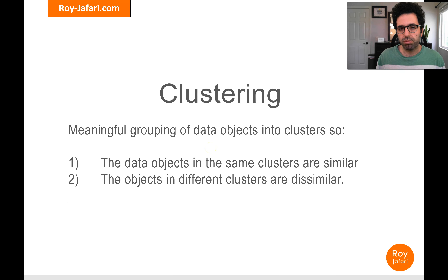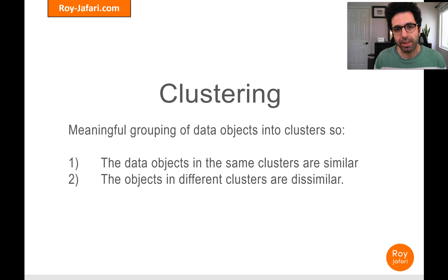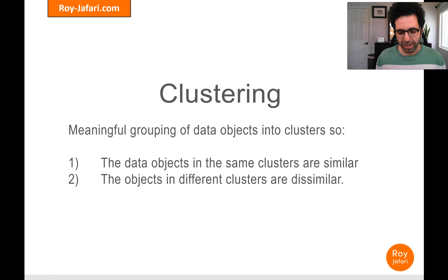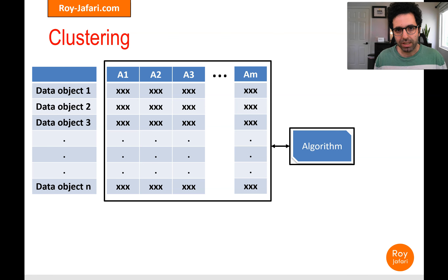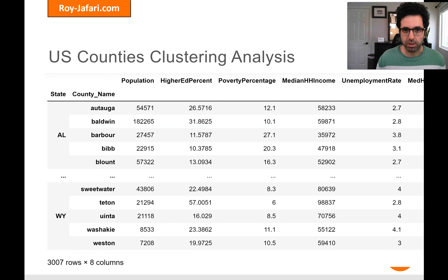Clustering — just a quick recap — is basically grouping data objects based on their attributes. These groupings are done in such a way that the data objects in the same group are more similar to each other than to data objects in other groups. The core of the matter is that data object similarity is gauged by the numbers or values in these attributes.